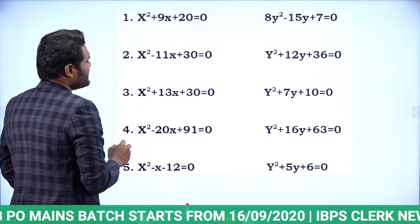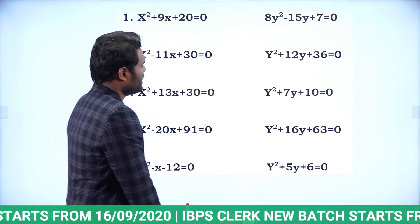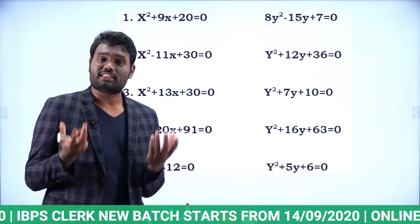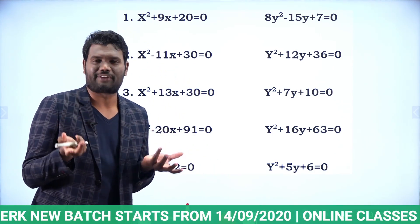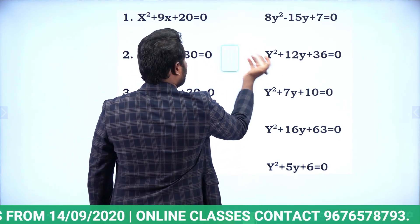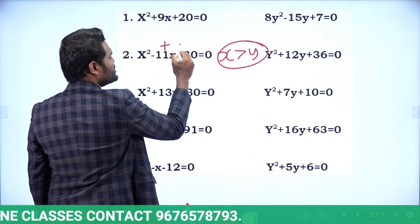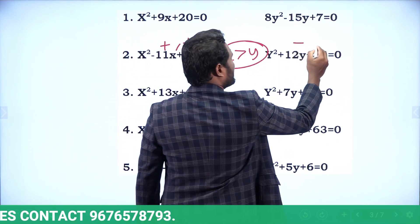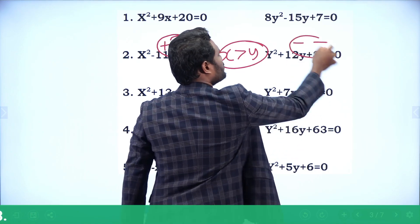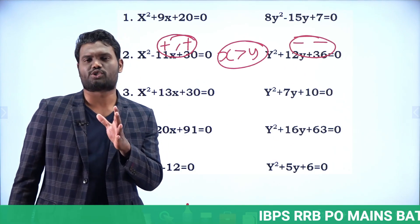Next: x² − 11x + 30 = 0 and y² + 12y + 36 = 0. Here the roots of x are positive and the roots of y are negative. Positive value is obviously greater than negative value, so we can say x > y. Just 2 seconds of time — you don't need to solve the question completely.